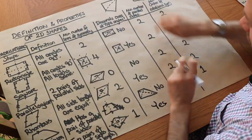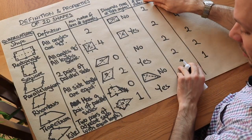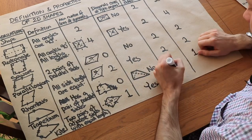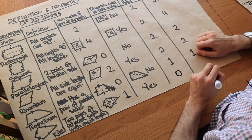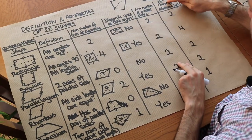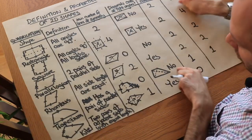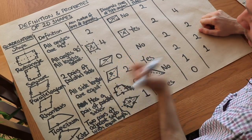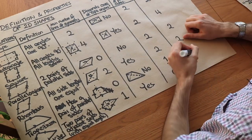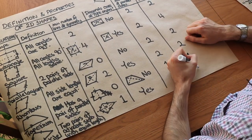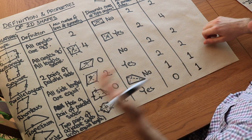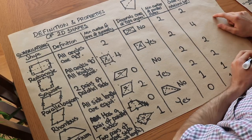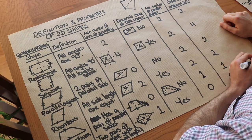A kite has no parallel sides, so the minimum number of parallel sides is zero. And since you cannot rotate a kite and see the same shape without a full rotation, its rotational symmetry is of order one — just the original shape. That covers all the quadrilaterals.